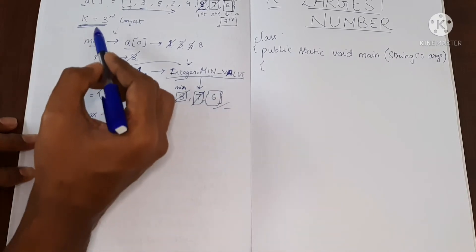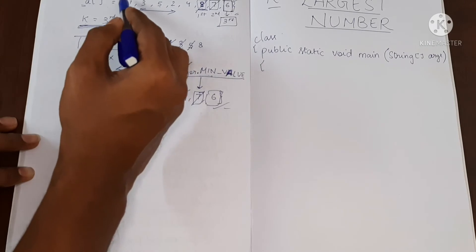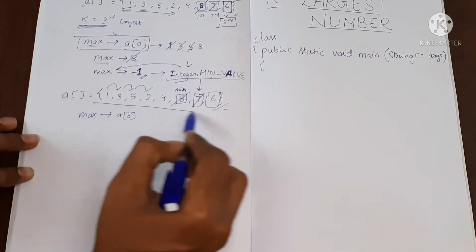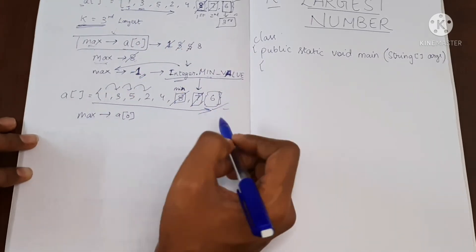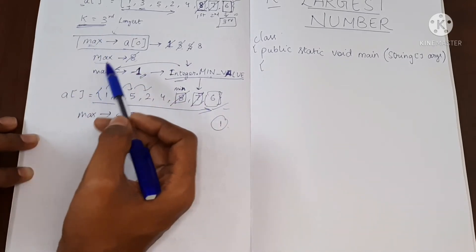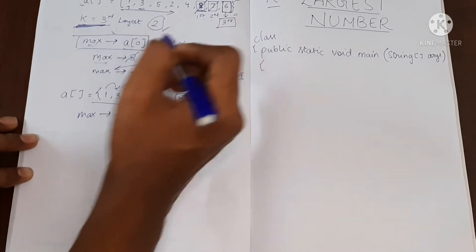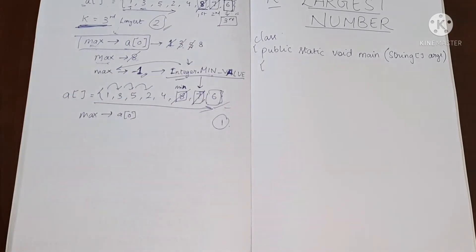One loop will be to find the maximum element, we need to traverse through the array. We need one loop for that. And the second loop is we have to find the largest value k number of times. So we need one more loop which runs k number of times. So now let's write the program.